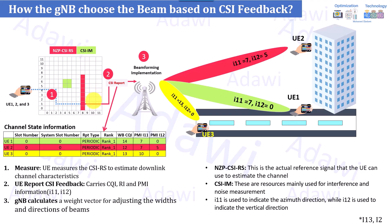Regarding non-zero power CSI-RS, you can increase the number of ports up to 32, which adds more overhead but gives the user more codebook entries to select from and may result in wider beams. There is always a trade-off between different configurations. Before going to codebook type 2, I would first like to take you through the UE capability check — how to verify how many CSI-RS ports are supported by the user.